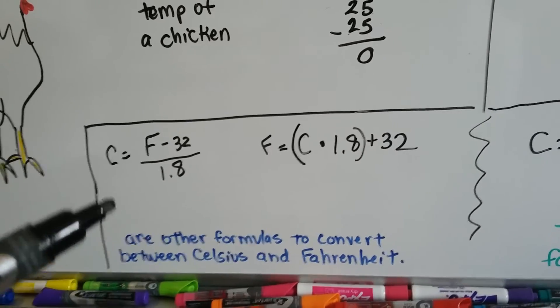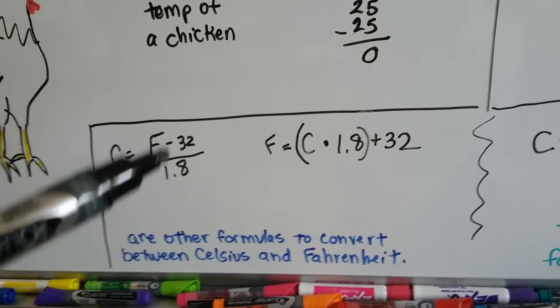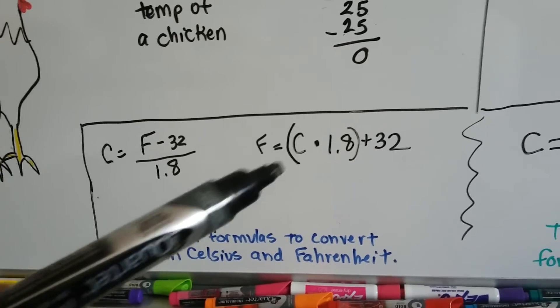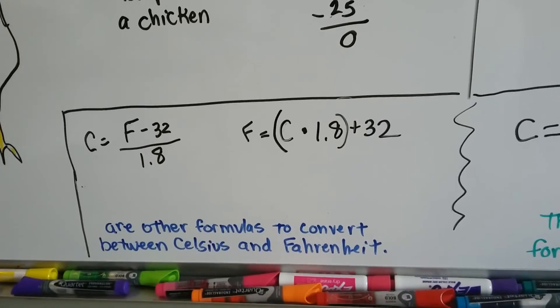It's the inverse operation. So to find the Celsius, we do this and we divide. And to find Fahrenheit, we do this and we multiply.